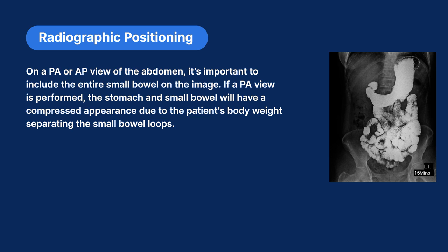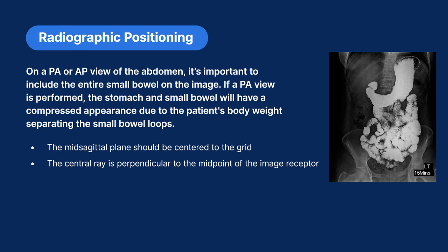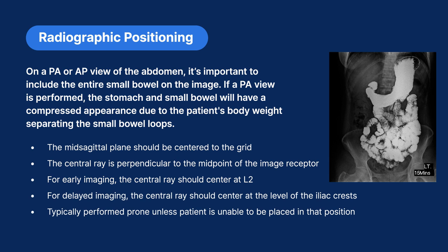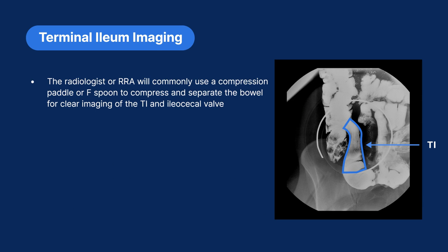Be sure to annotate the image so there is documentation of contrast progression. When positioning for a PA or AP view of the abdomen, the midsagittal plane should be centered to the grid, and the central ray is perpendicular to the midpoint of the image receptor. For early imaging of the small bowel, the central ray should be centered at L2. For delayed imaging, the central ray should be centered at the level of the iliac crest. Once contrast reaches the ileocecal valve, the patient is brought into a fluoroscopy room for terminal ileum imaging, where the radiologist or RRA will use a compression paddle or F-spoon to compress and separate the bowel for clear imaging of the TI and ileocecal valve.